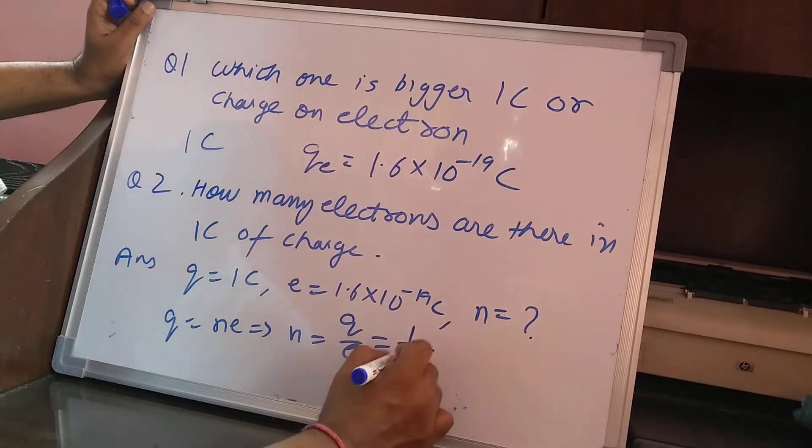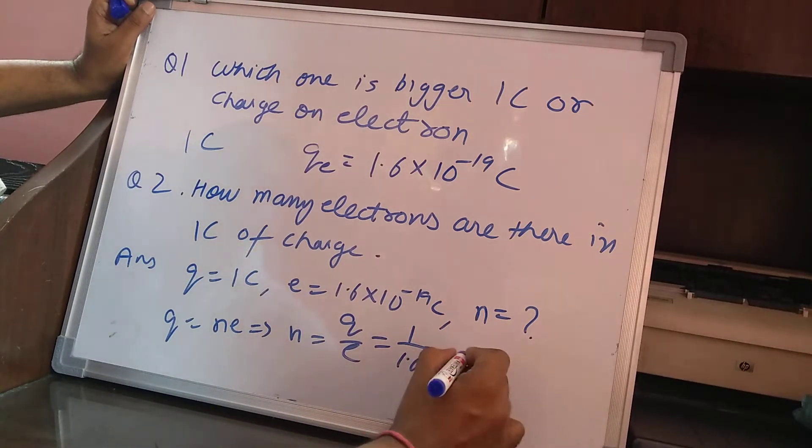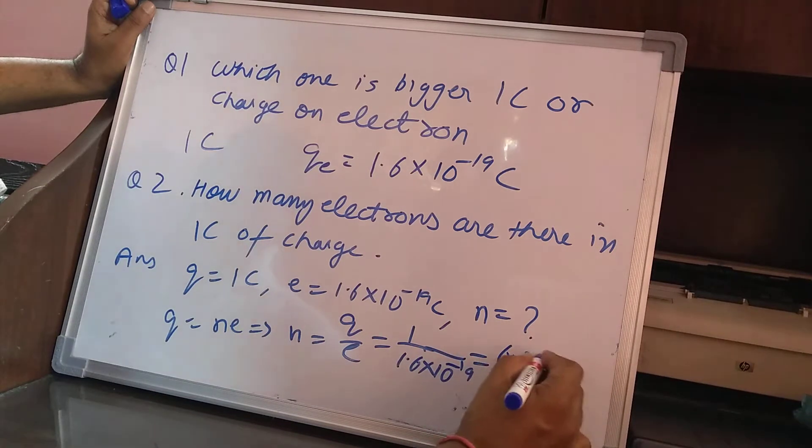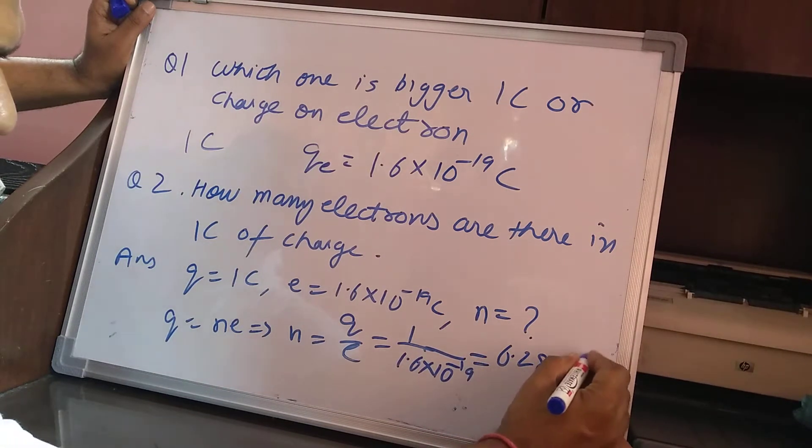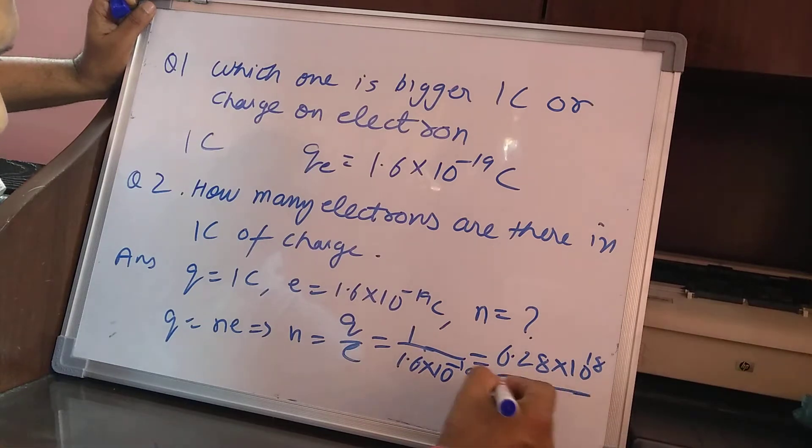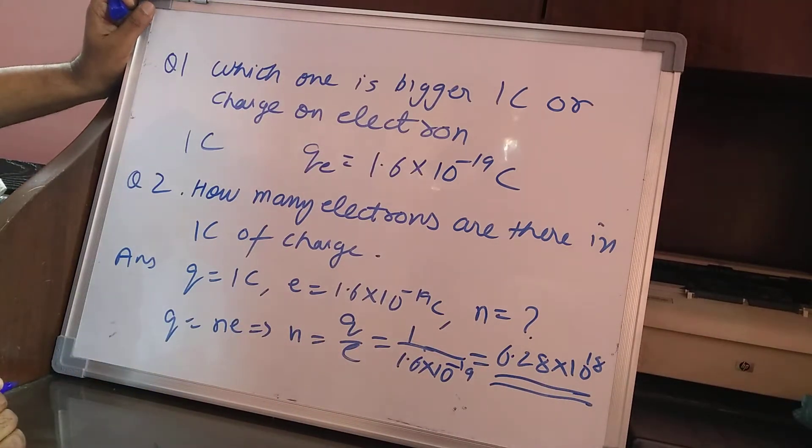So if I put the value 1 upon 1.6 into 10 raised to the power minus 19, will give you 6.28 into 10 raised to the power 18 electrons are there in one coulomb of charge.